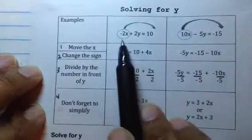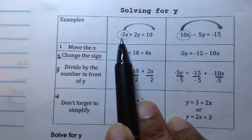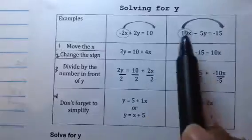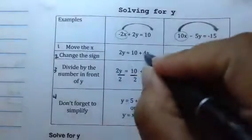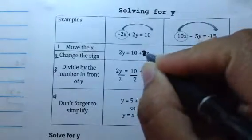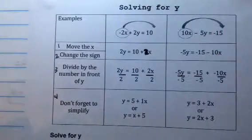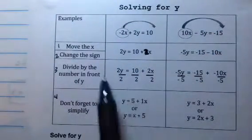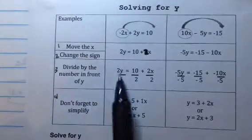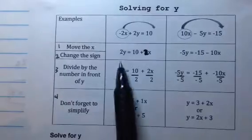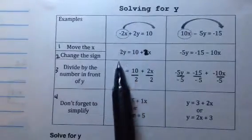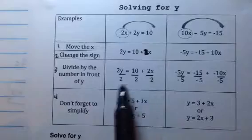So here we have a negative 2X. We're going to move it over and it's going to become a positive 2X. That should be a 2 there. So now we've moved it, we've changed it, and now we're going to divide by the number in front of the Y. The number in front of the Y is a positive 2, so the positive 2 is going to divide every single term.